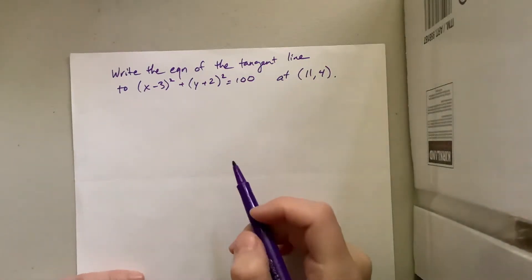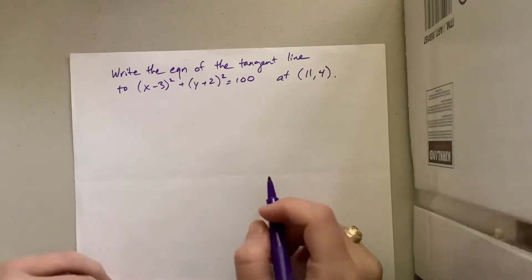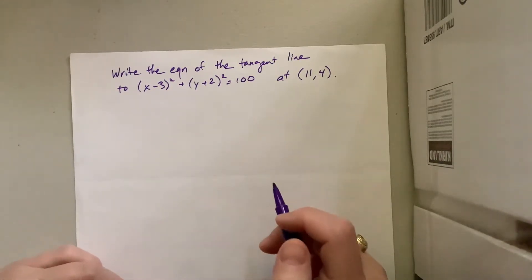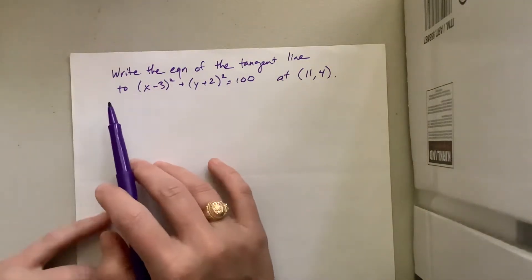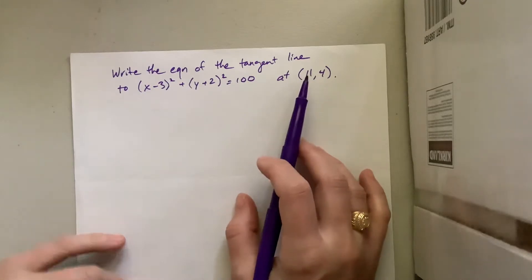Okay, somebody asked me a question about one of the problems on the quizzes, and I don't want to do your problem. So I created another one that I think is the same idea. It says, write the equation of the tangent line to a circle at a point. Okay, so this point is on the circle.